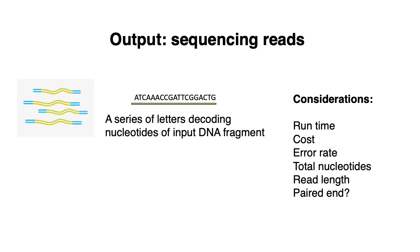Another consideration is paired-end sequencing, which most protocols use today. When you generate fragments to sequence, if you're using short-read technologies, you can only sequence the ends of those fragments. Paired-end sequencing allows you to sequence both ends of each fragment. Knowing approximately the fragment length and having both end sequences means that even though you have two short sequences from a single fragment, you know approximately how far apart they were on the original genome — which helps during genome assembly.